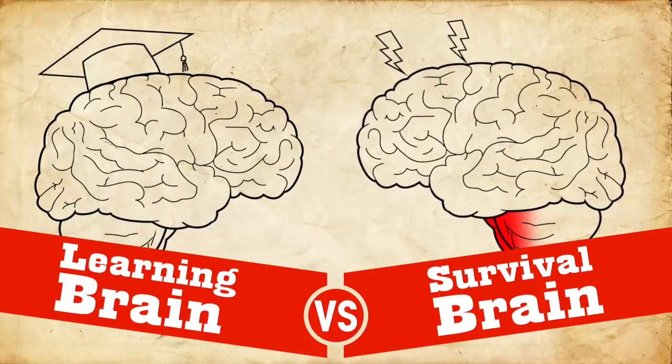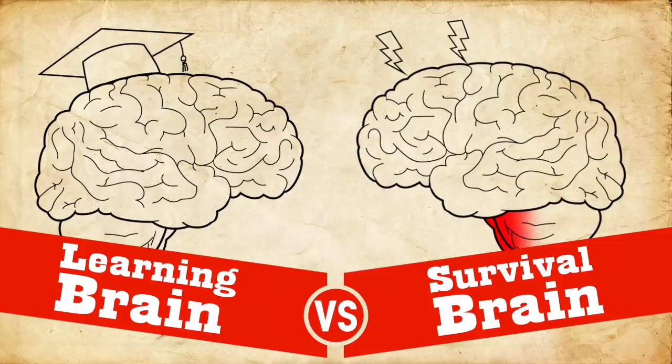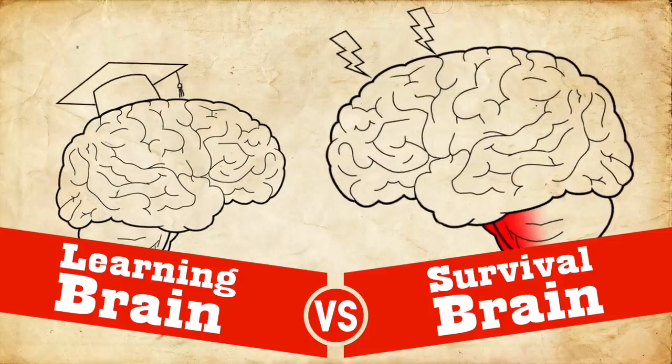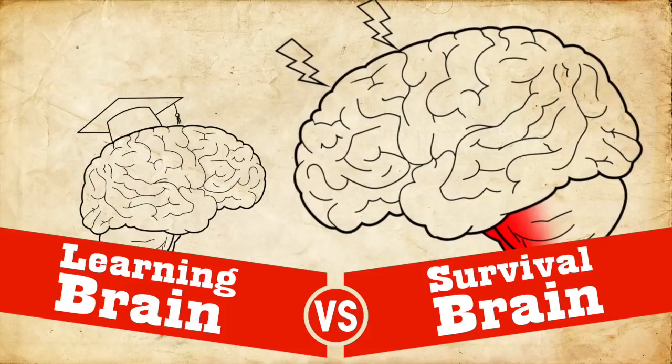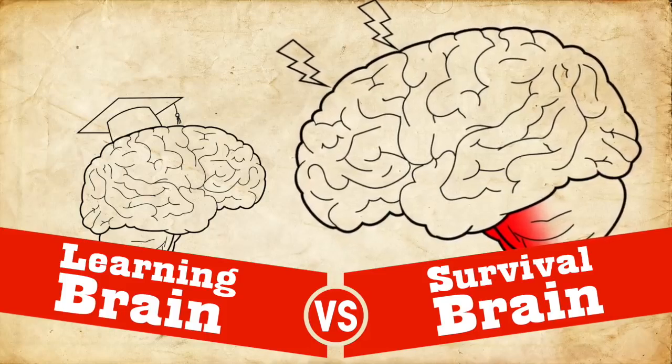Now it's really important to understand how learning brain and survival brain interact. Because survival brain always trumps learning brain. And it makes sense because survival brain is just trying to save your life. And so if it thinks that there's something dangerous happening, you better pay attention to it, right?